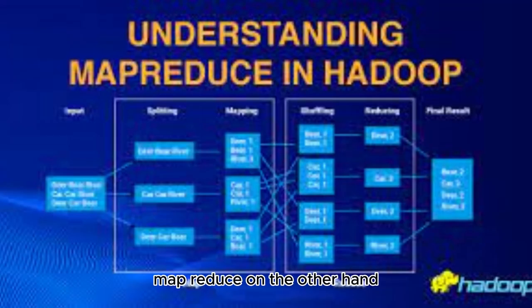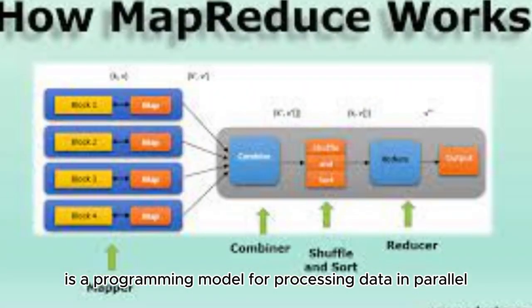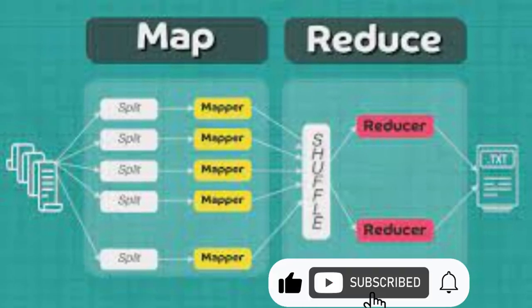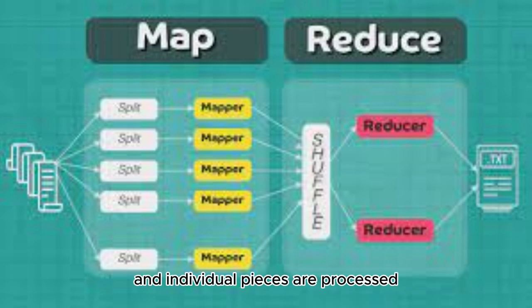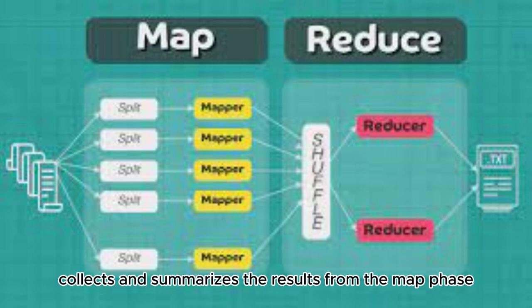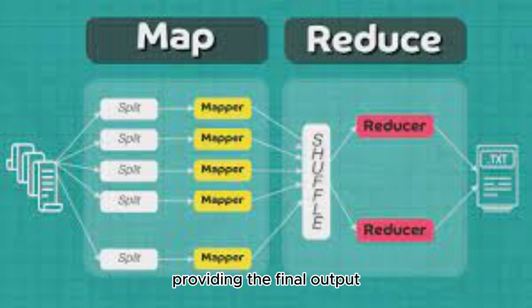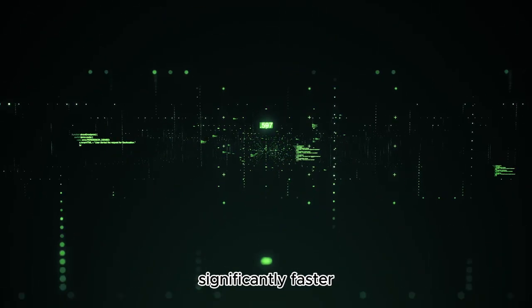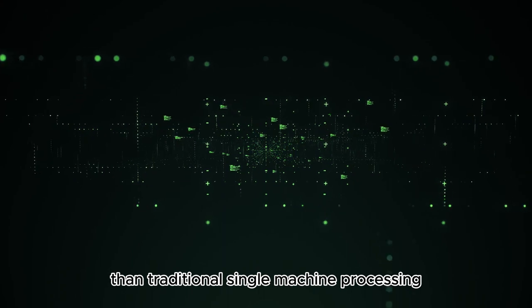MapReduce, on the other hand, is a programming model for processing data in parallel. It divides the processing task into two phases, Map and Reduce. During the Map phase, data is broken down further and individual pieces are processed on different nodes in the cluster. The Reduce phase collects and summarizes the results from the Map phase, providing the final output. This distributed processing allows Hadoop to handle massive data sets efficiently, significantly faster than traditional single machine processing.